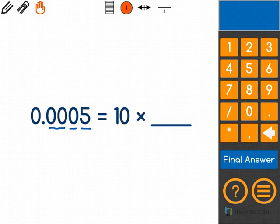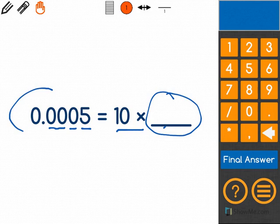5 10,000ths is equal to 10 times a blank, and we're trying to find out what goes in that blank. So what we know is that we had to multiply a number by 10 in order to get us 5 10,000ths.